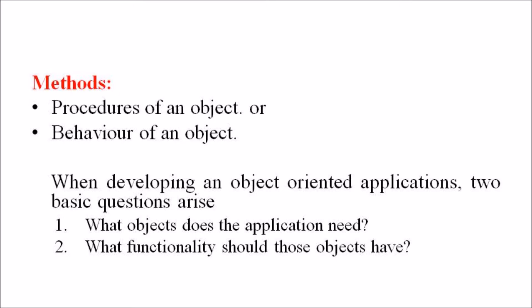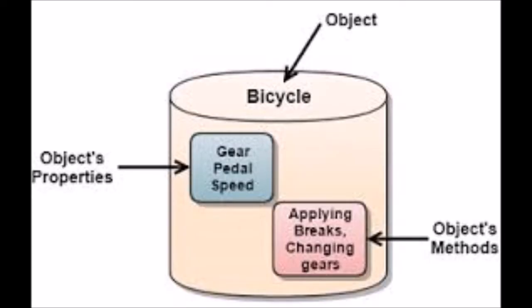The term 'object' was formally utilized in the Simula language. It means a combination of data and logic that represents some real-world entity. When developing an object-oriented application, two basic questions arise: what objects does the application need, and what functionality should those objects have? Programming in an object-oriented system consists of adding new kinds of objects to the system and defining how they behave.